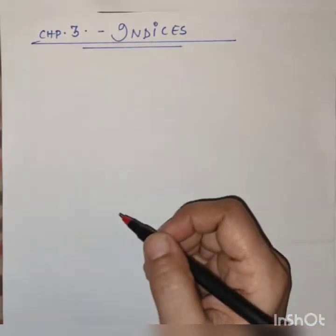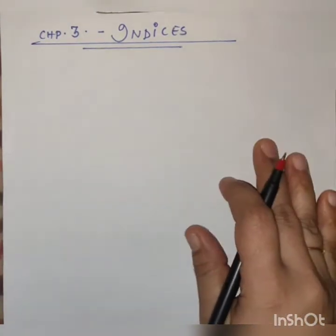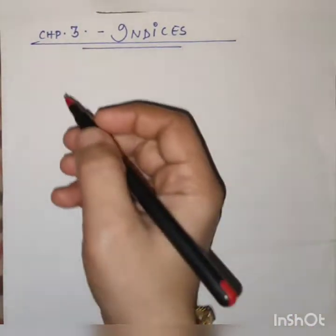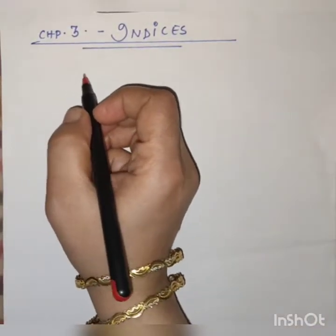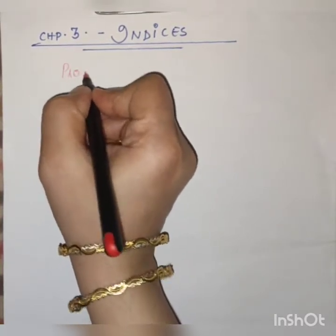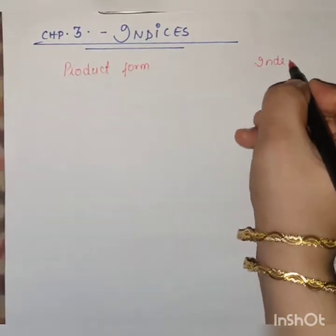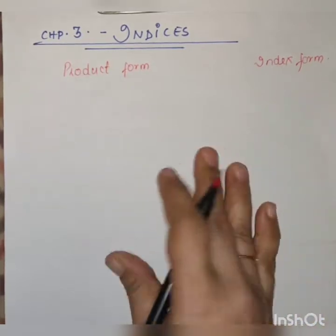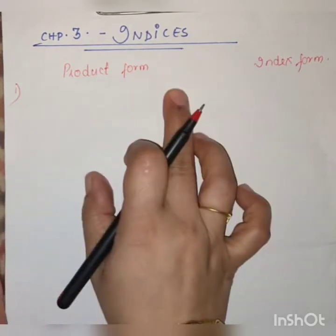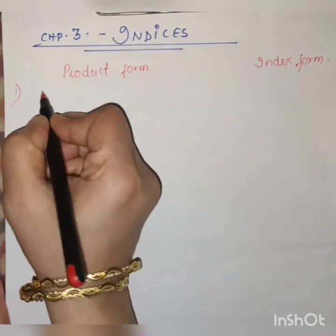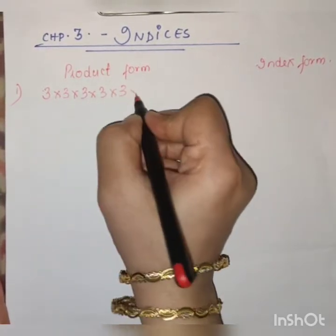Now first we will recall all that we have studied in our previous standard. We know there are two types of forms. One is product form and the other is index form. What is product form? Take for example a given number multiplied many times - for example 3 into 3 into 3.